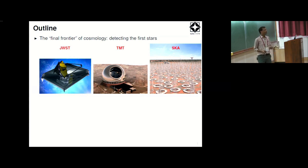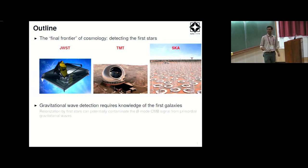Now what does this have to do with gravitational waves? So basically in this talk I want to just highlight two points with examples. First thing, the detection of gravitational waves actually requires knowledge of the universe at these times, in particular the knowledge about the first galaxies. The example I will choose here is that the reionization by the first stars can potentially contaminate the so-called B-mode CMB signal which arises from primordial gravitational waves.